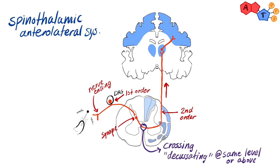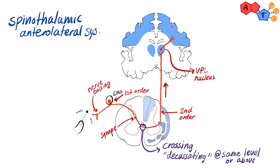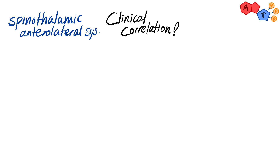The second order neurons reach the thalamus and synapse in the ventral posterior lateral nucleus (VPL) of the thalamus, from which third order neurons arise, carrying the information to the final destination in the cerebral cortex. So for pain, the signal travels from the receptor to the dorsal root ganglia, then via the second order neuron to the contralateral side in the lateral spinothalamic tract, until it reaches the VPL nucleus in the thalamus, and then the cerebral cortex.